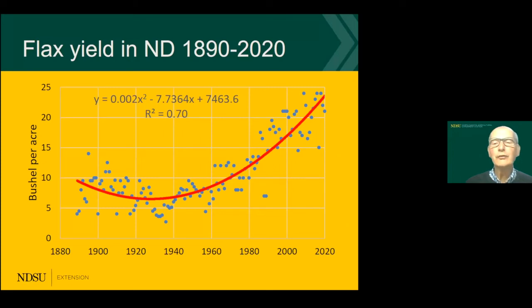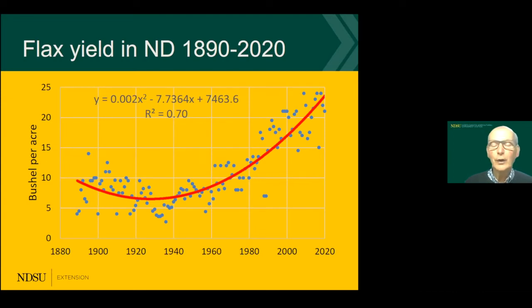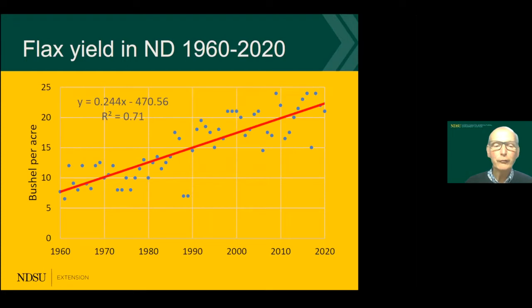One interesting thing to look at over time is the yield level. This graph shows all yields reported by the statistical service from 1889 to 2020. There is a curvature — in the 30s and 40s yields were lower, which we associate with the Dust Bowl era and drought. I'm going to focus on the period from 1960 to 2020, the last harvest for which we have data.